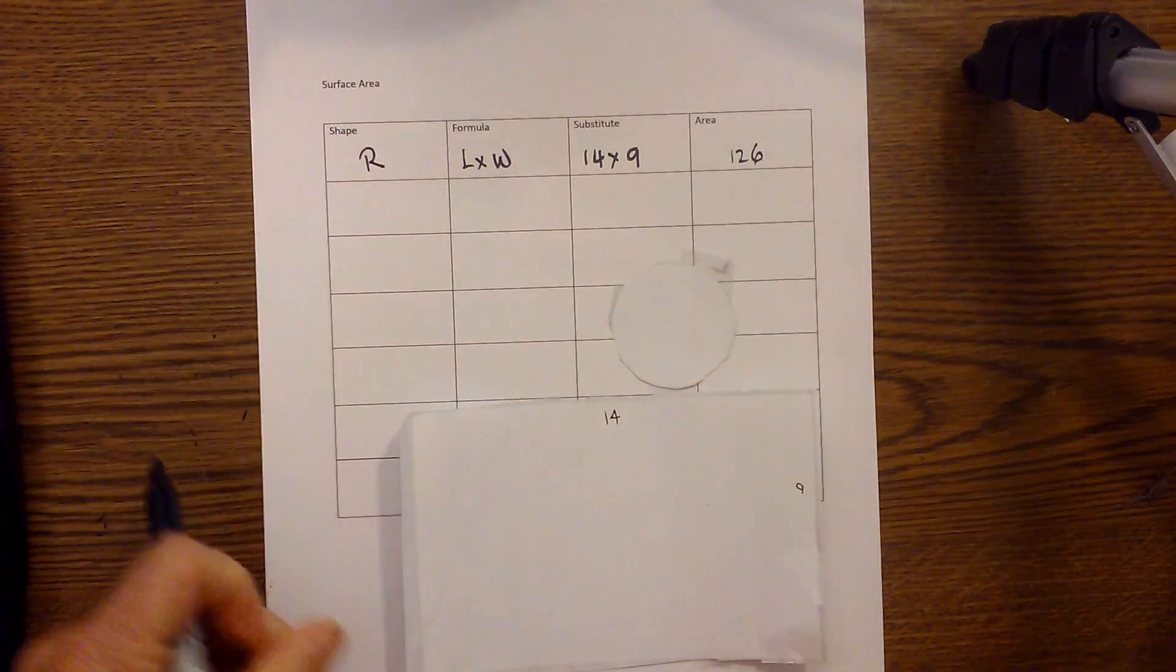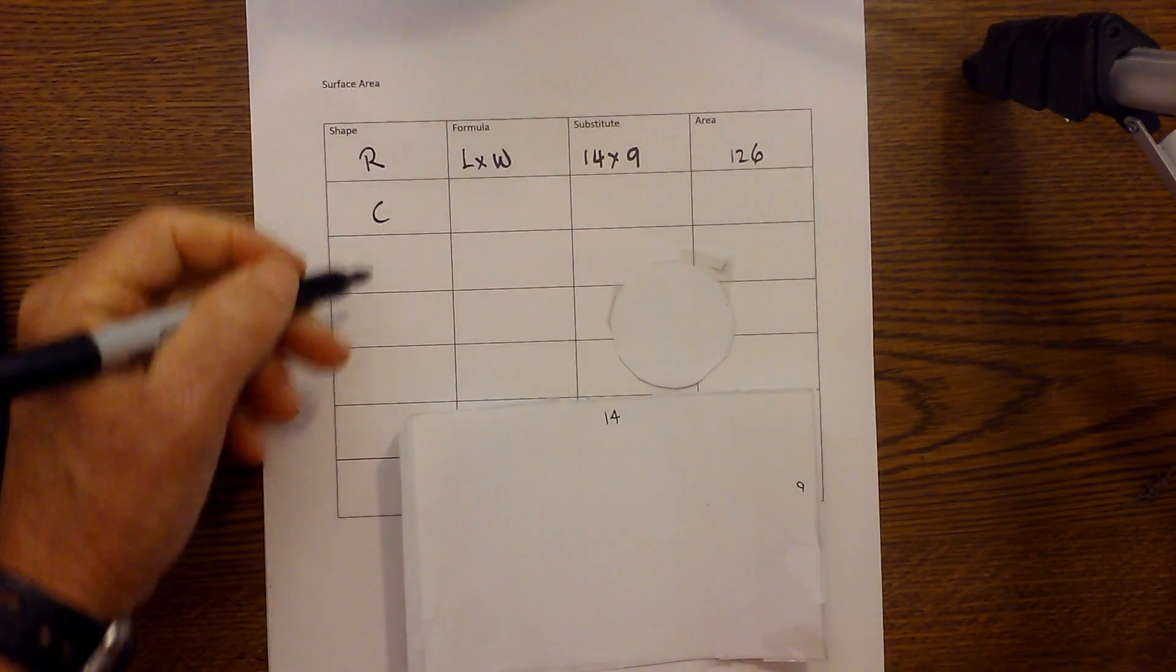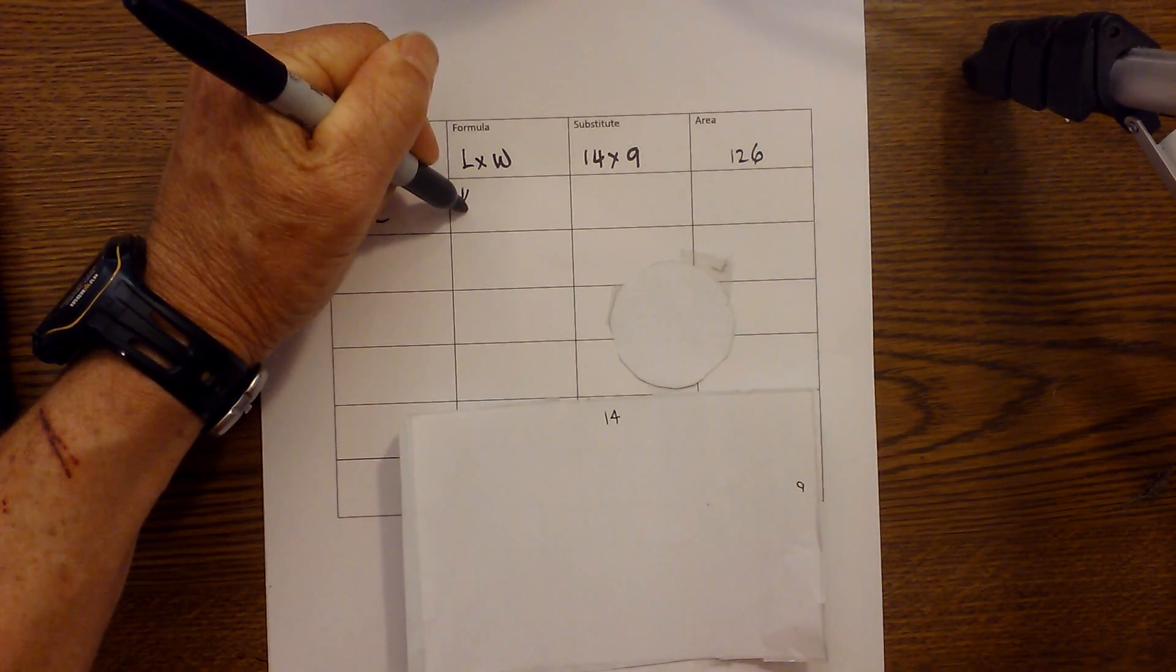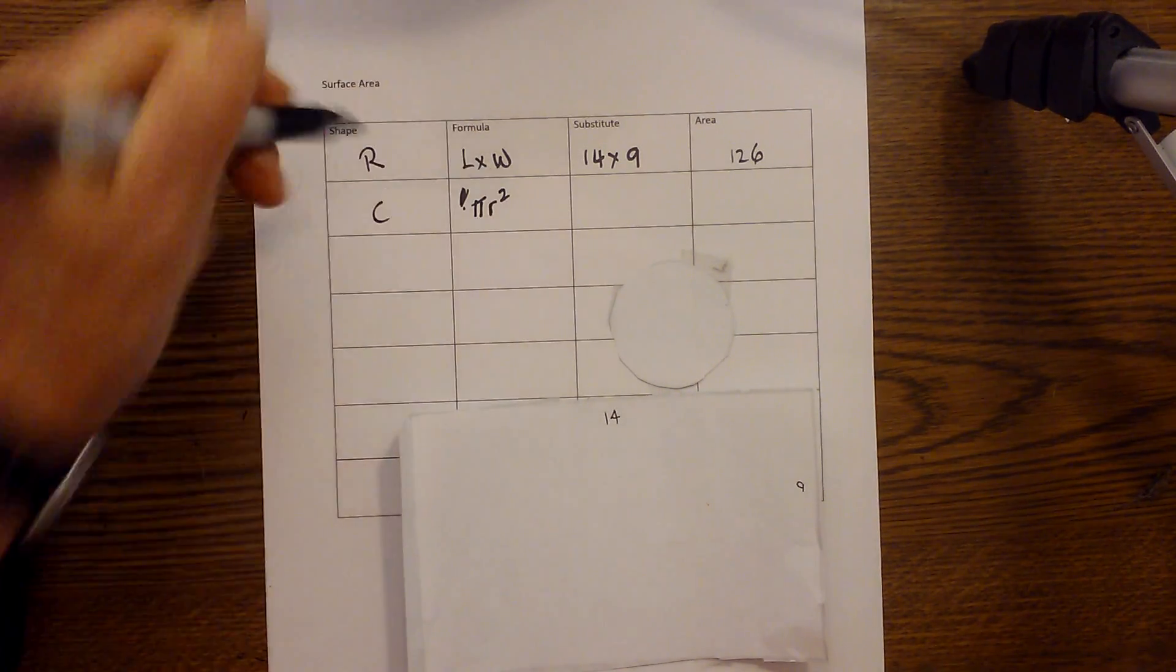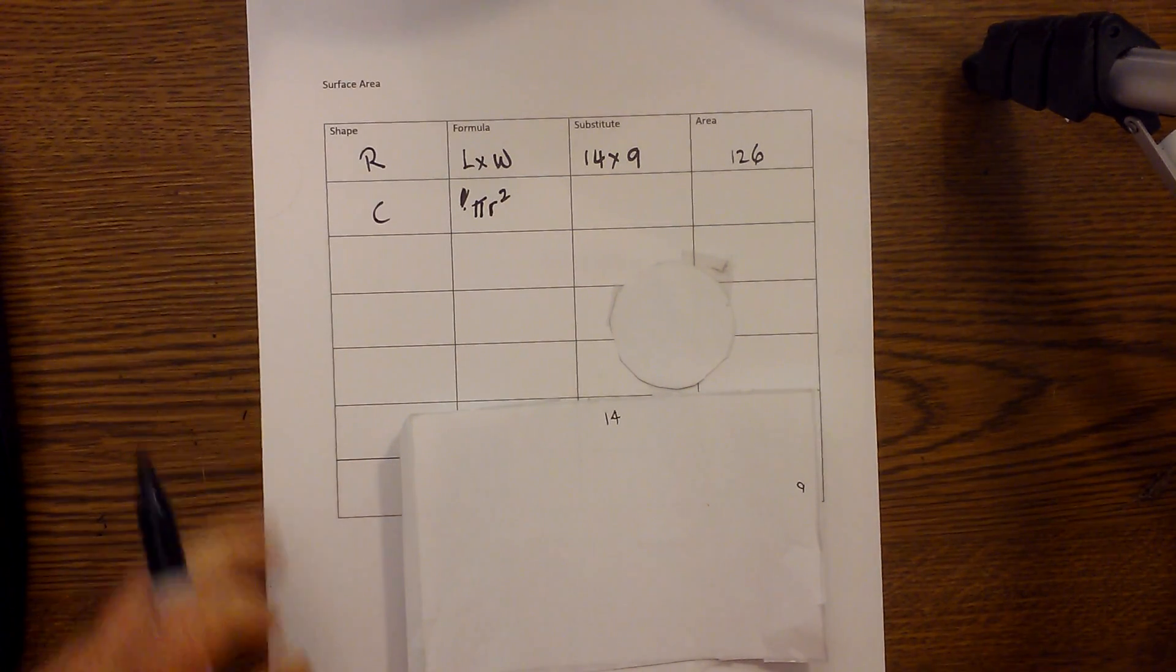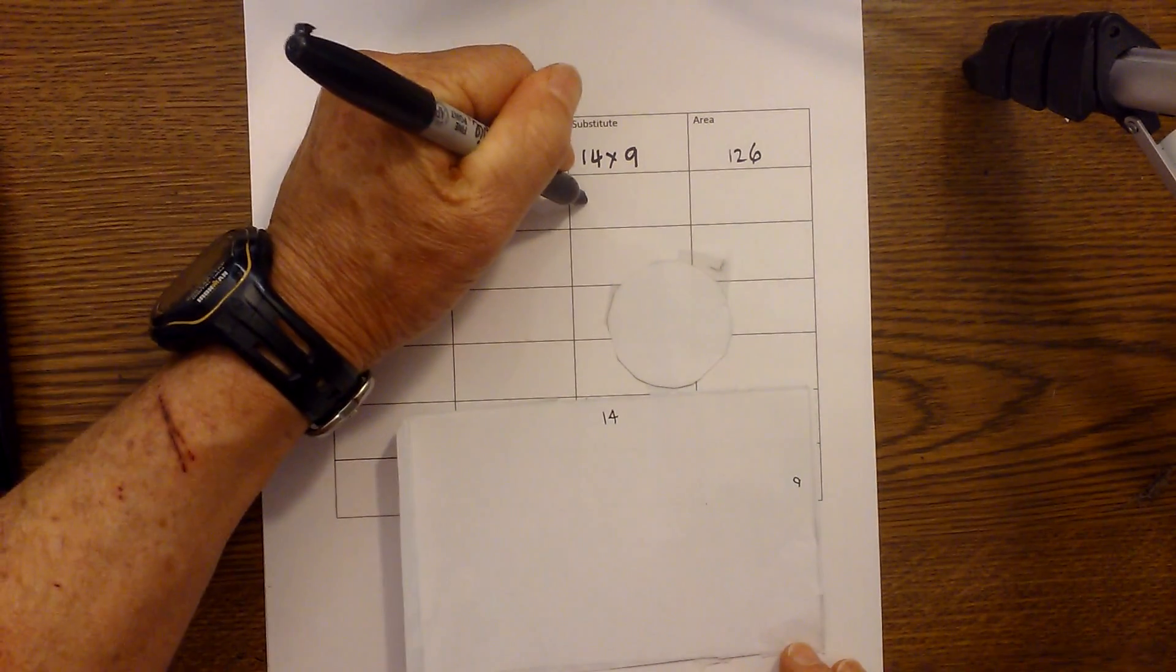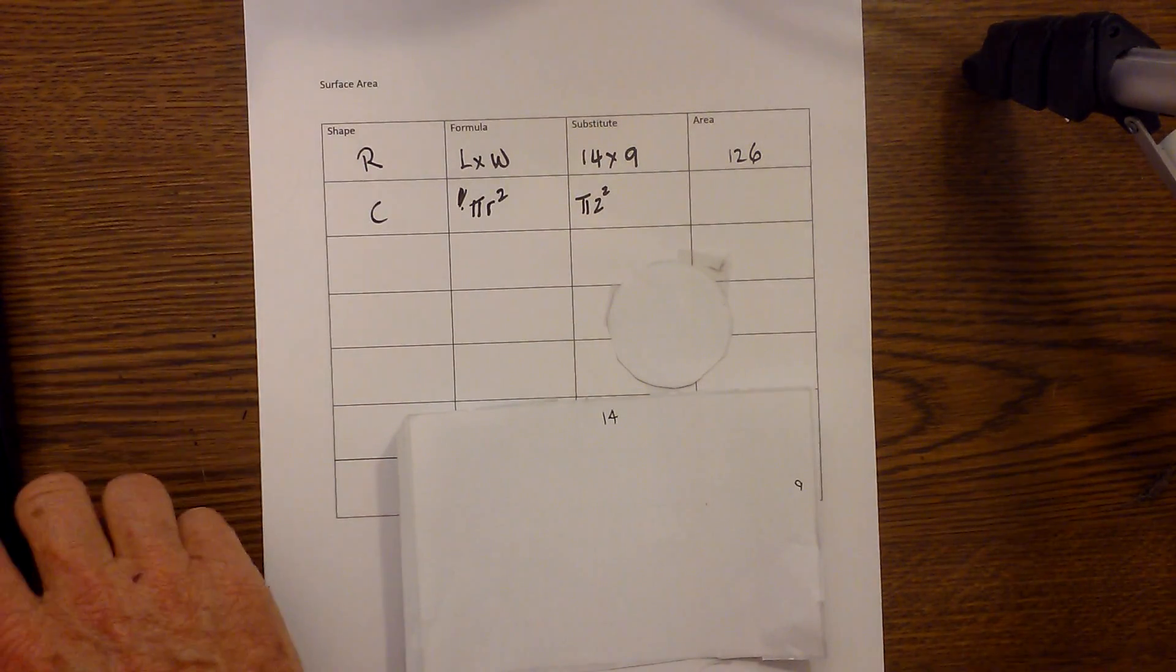And then we have a circle, so I'm gonna put C for circle and the formula for the area is pi times radius squared. I have the diameter calculated as 4 so that means the radius is going to be 2. So we're gonna go pi times 2 squared.